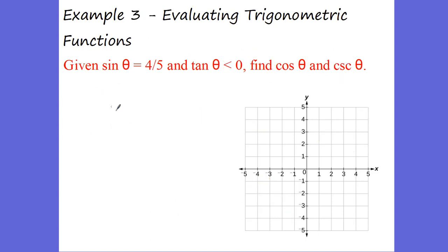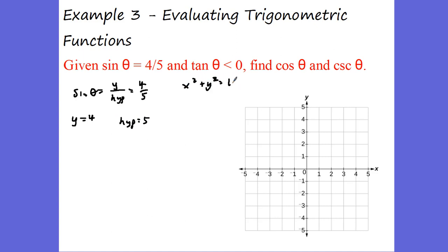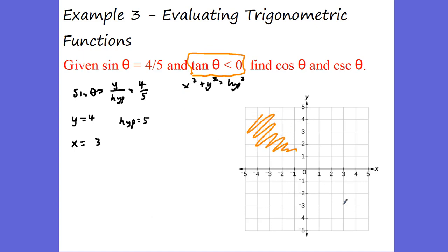A little bit harder problem. It says sine of my angle equals 4 over 5. Sine equals y over hypotenuse, so my y value is 4 and hypotenuse is 5. Using the Pythagorean theorem — x squared plus y squared equals hypotenuse squared — this is a 3-4-5 triangle, so x is 3. But remember x could be positive or negative. They gave me the stipulation that tangent is less than 0, meaning tangent is negative. Tangent is negative in quadrant 2 and quadrant 4.